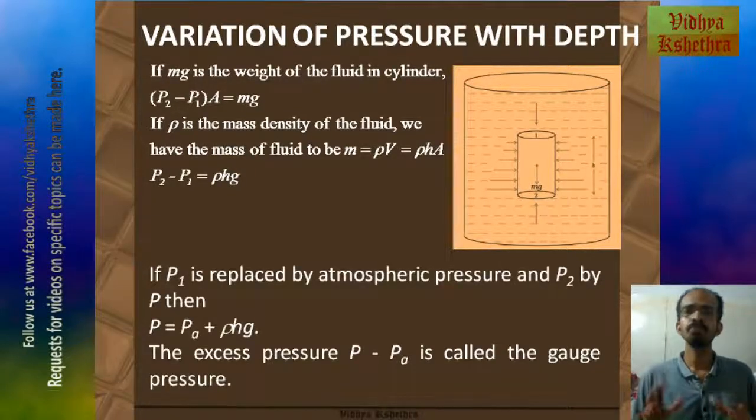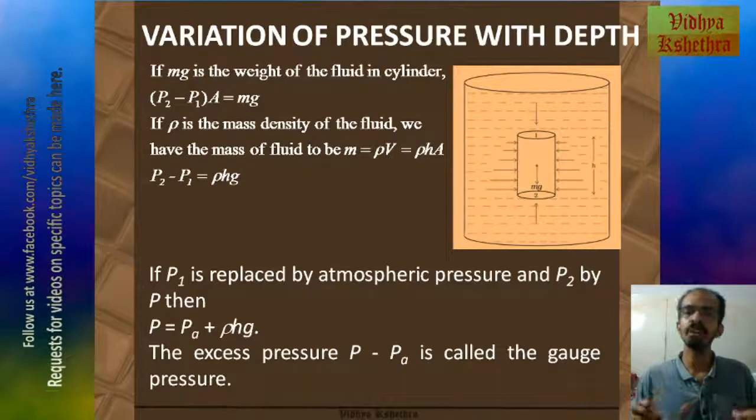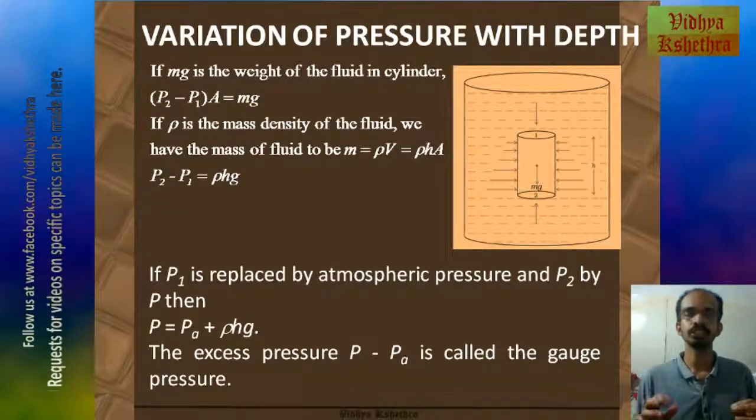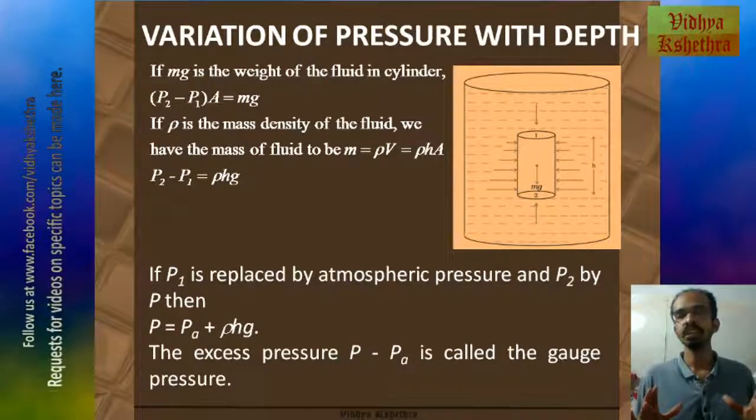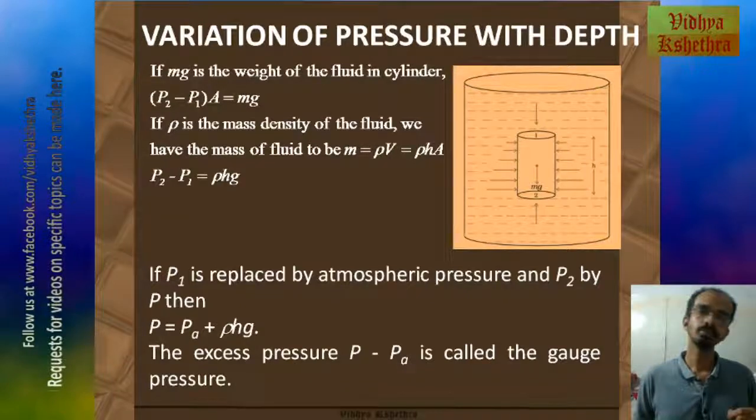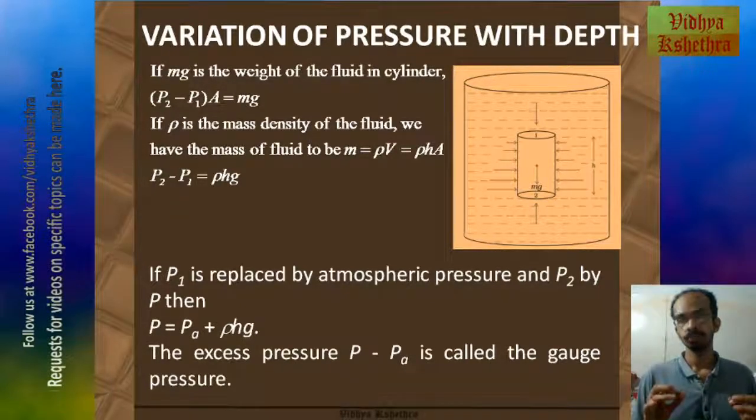So if P1 is replaced by atmospheric pressure and P2 by P, then we get this equation: the pressure at a height H from the surface, P equals PA, where PA is the atmospheric pressure, plus rho Hg. The excess pressure P minus PA is called the gauge pressure. So this shows that pressure increases with depth.